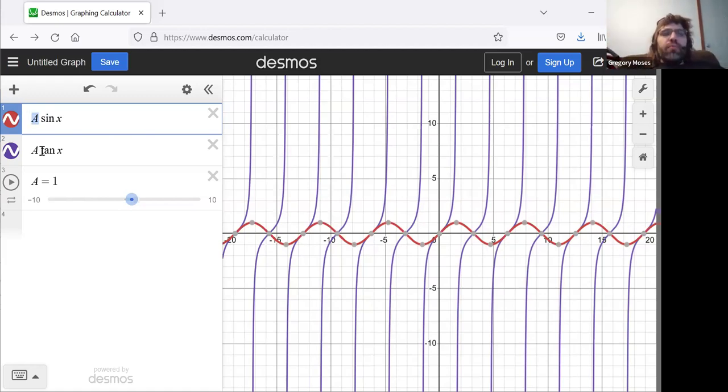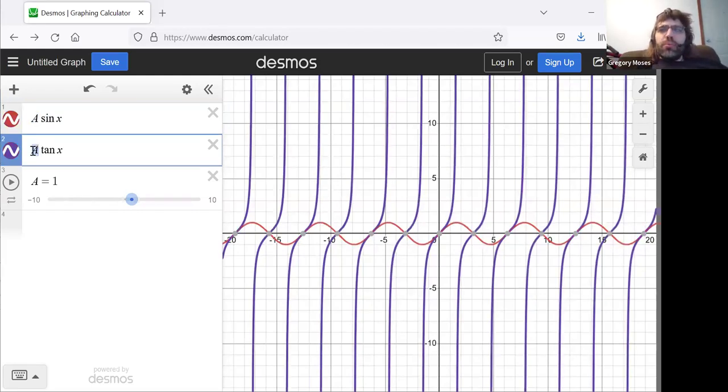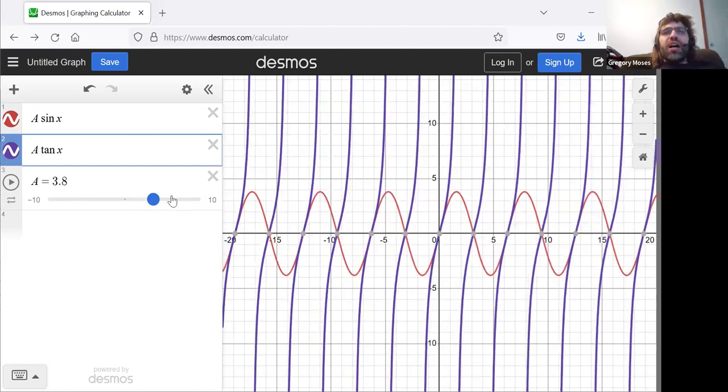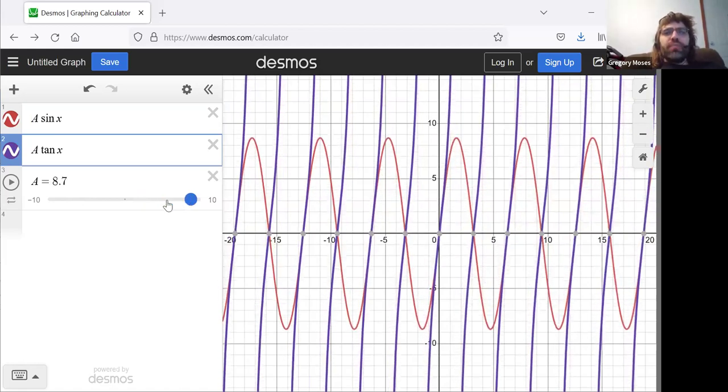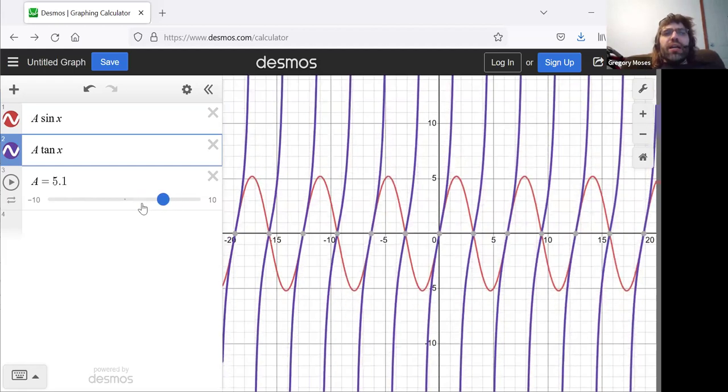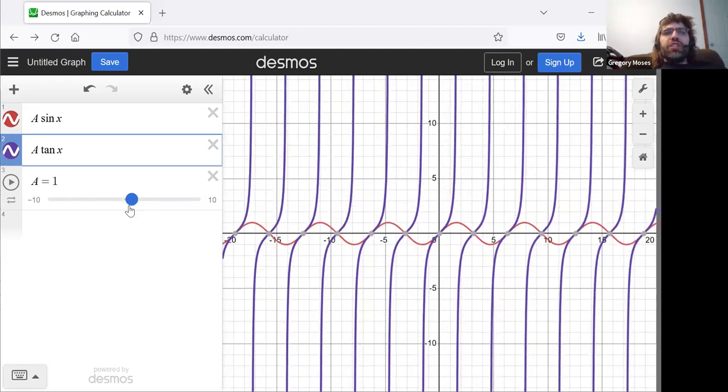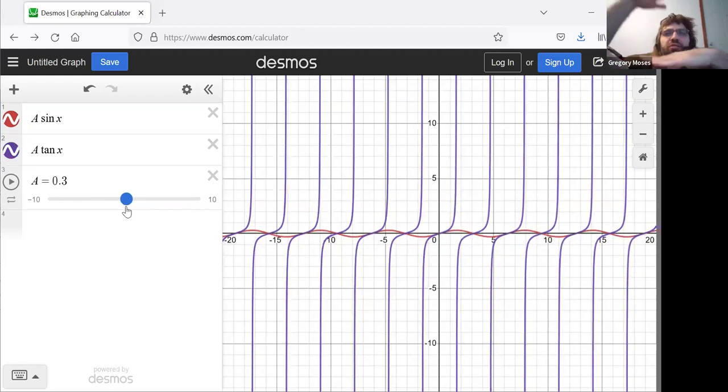And with the tangent, we don't have a special name for this anymore. It's not called the amplitude, but the same thing happens. A increases, and just like the sine gets stretched, the tangent gets stretched. A decreases, and just like the sine gets smushed, the tangent gets smushed.